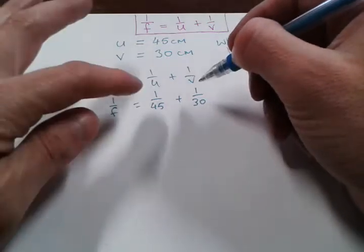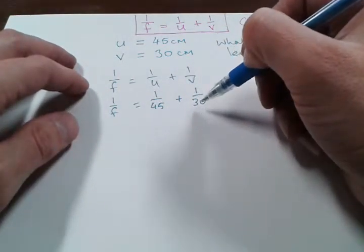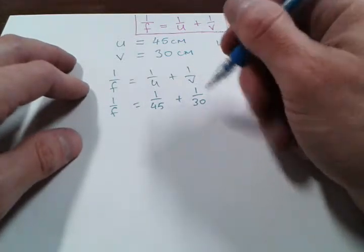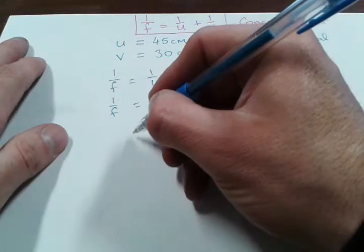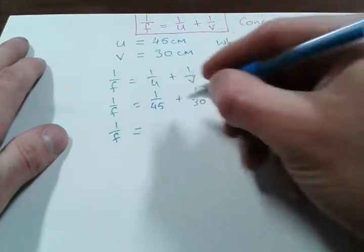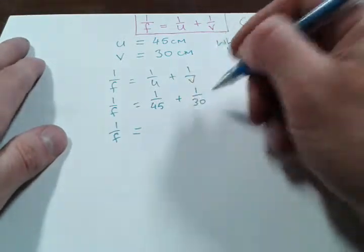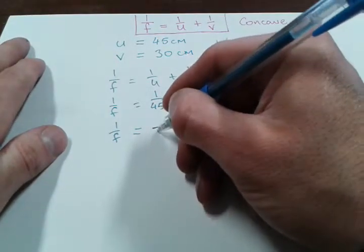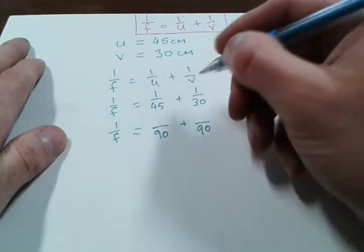You could put this into a calculator - 1 over 45 plus 1 over 30 - and it'll give you the answer. I'm going to show here how to do this with a common denominator. A common denominator is going to be 90 because 45 will divide evenly into 90 and so will 30.